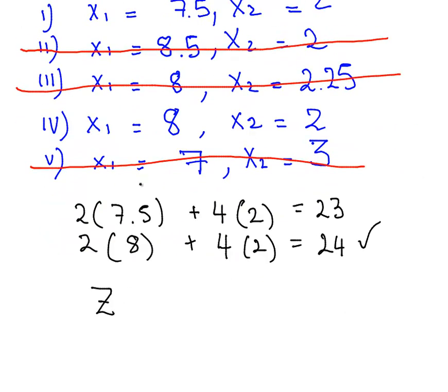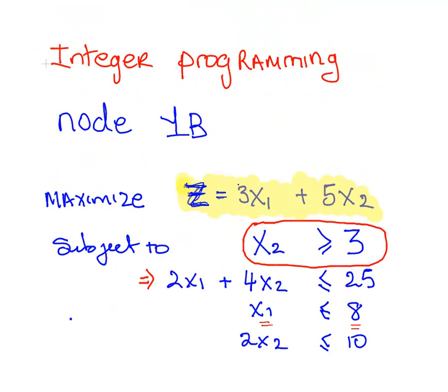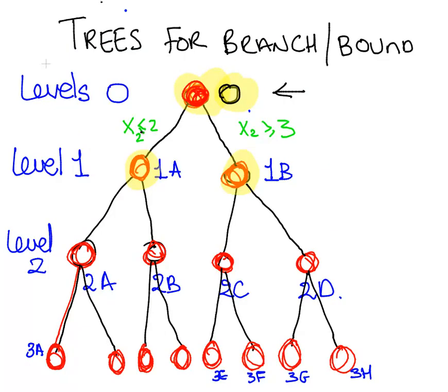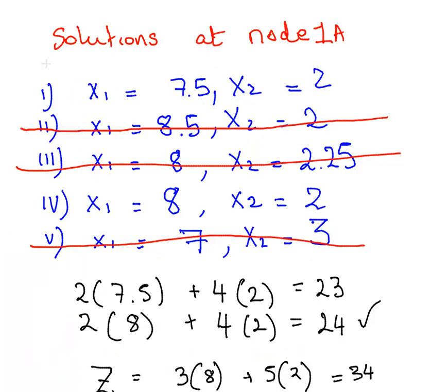Let's just evaluate z here now. We're just checking that it fits in the constraints. Now we're going to maximize z. So it's 3x1 plus 5x2 equals 3 times 8 plus 5 times 2. That's equal to 34. Let's add that to our tree. Let's put it in green here, 34. Now our optimal solution for node 1A is an integer. It's an integer solution, 8 and 2.